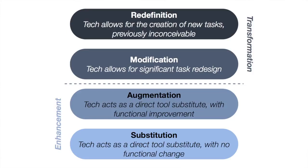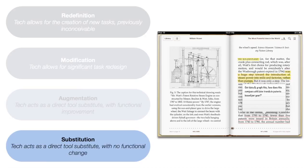The first one is a model I designed, called the SAMR model. The SAMR model links how you use a technology to the outcomes for students. If you use a technology at what is called the substitution level — essentially using it to replace an older technology and doing exactly the same sort of things you were doing in your classroom before — well, this may be useful and may set the stage for future developments, but it will not in any significant way impact student outcomes.